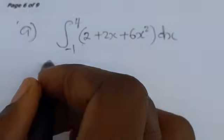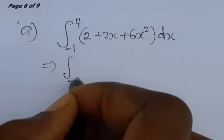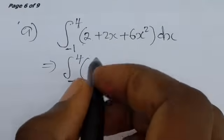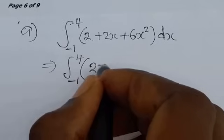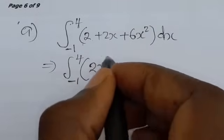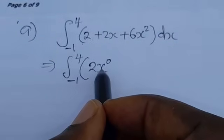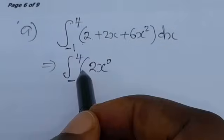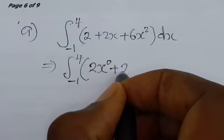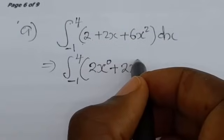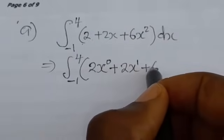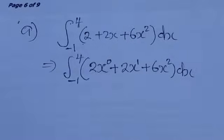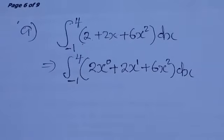The limits are from negative 1 to 4. We're going to give the 2 an x by writing it as 2x to the power 0. From the laws of indices, any number to the power 0 is 1, so 1 times 2 gets us back the 2. So we rewrite as 2x to the power 0 plus 2x to the power 1 plus 6x squared dx. This and the original expression are just the same.